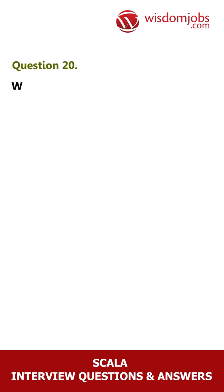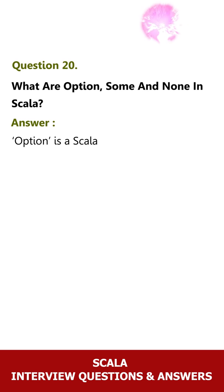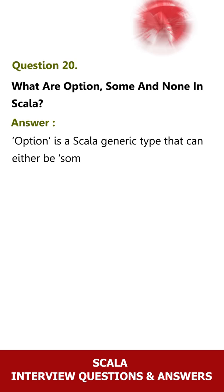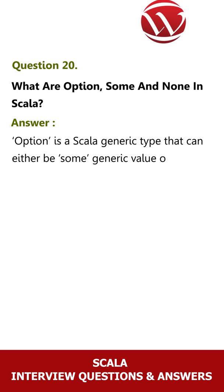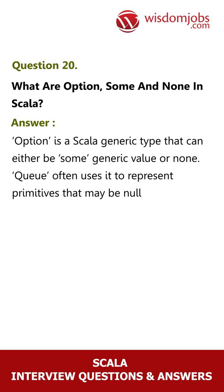Question 20: What are Option, Some, and None in Scala? Answer: Option is a Scala generic type that can either be Some generic value or None. It is often used to represent primitives that may be null.